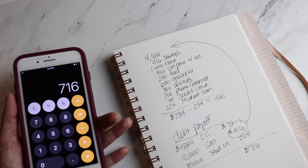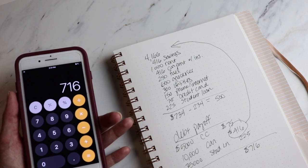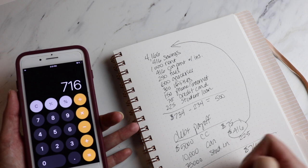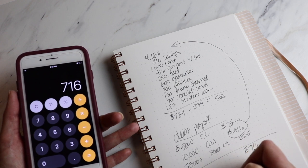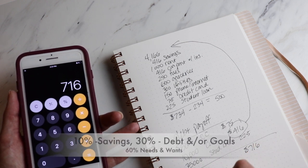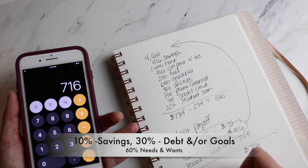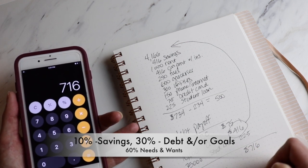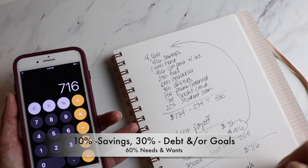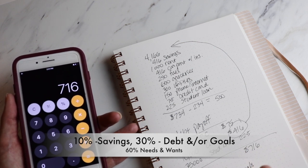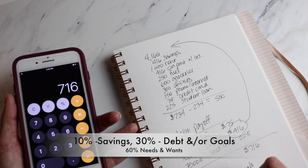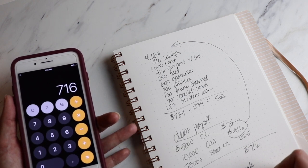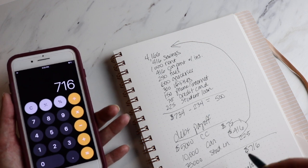So, what I want to share with you is the way that I do my plan is 10% of your income going to savings, 30% towards debt or other goals, and 60% wants and needs, of course, needs first and then wants.